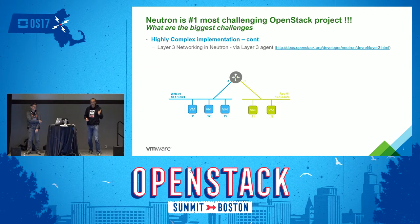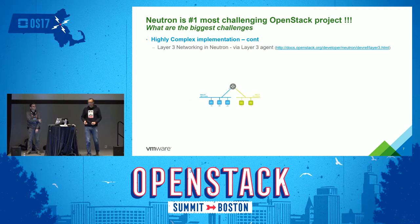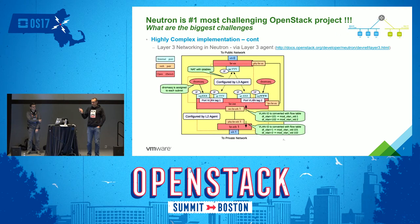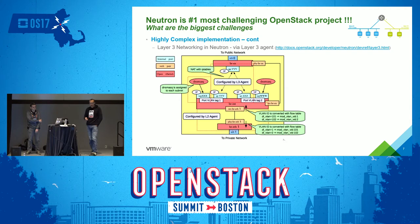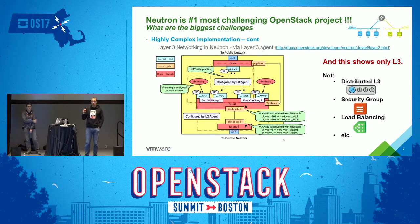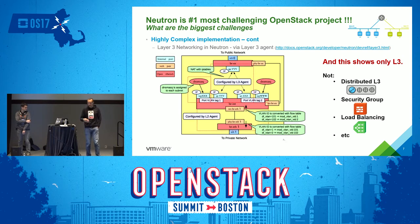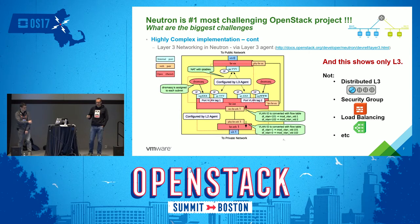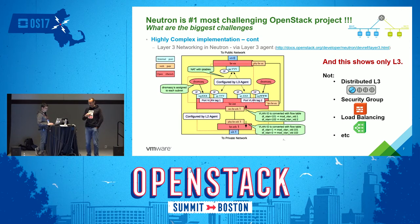That's only L2. Now if you do L3 — just basic routing — that's what it looks like in OpenStack. I won't go through how it works, but that's the complex stuff done by Neutron. I'm not even showing distributed L3, security groups, DFW, load balancing, or QoS. Just basic L2 and basic L3 is already a nightmare — or complex, let's say. Maybe some of you understand that piece.